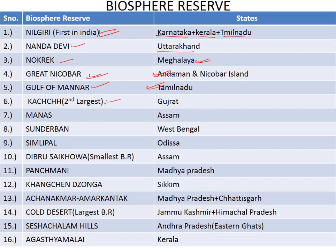Sixth is the Kutch Biosphere Reserve in Gujarat — it is important to note that Kutch is the second largest biosphere reserve in India. Seventh is the Manas Biosphere Reserve in Assam. Next is Sundarbans Biosphere Reserve in West Bengal. After that, Simlipal Biosphere Reserve in Odisha.